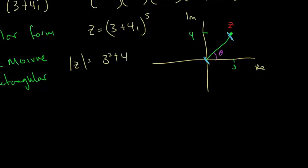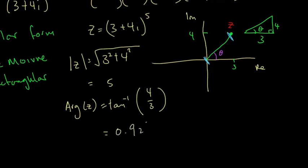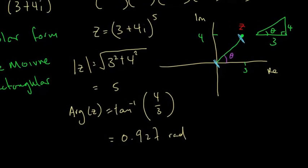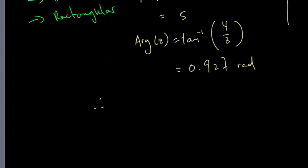The modulus of Z equals √(3² + 4²), which equals 5. For the argument of Z, it's just like a normal right-angle triangle — this side is 4, this side is 3, and θ is the angle I need to calculate. So the argument equals tan⁻¹(4/3), which gives 0.927 radians.